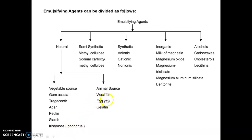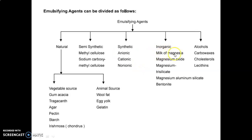From animal sources, we have wool fat, egg yolk, and gelatin. Semi-synthetic agents include methyl cellulose and sodium carboxymethyl cellulose (sodium CMC). Synthetic agents are anionic (containing negative charge), cationic (positive charge), and non-ionic (charge-less). Inorganic agents include milk of magnesia, magnesium oxide, magnesium trisilicate, magnesium aluminum silicate, and bentonite. The alcohols group includes carbowaxes, cholesterol, and lecithins.